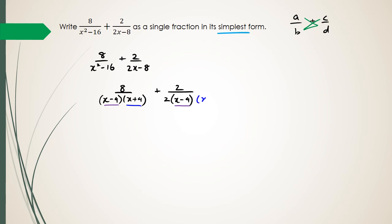So if I multiply the denominator by x plus 4, I've also got to multiply the numerator by x plus 4 as well.